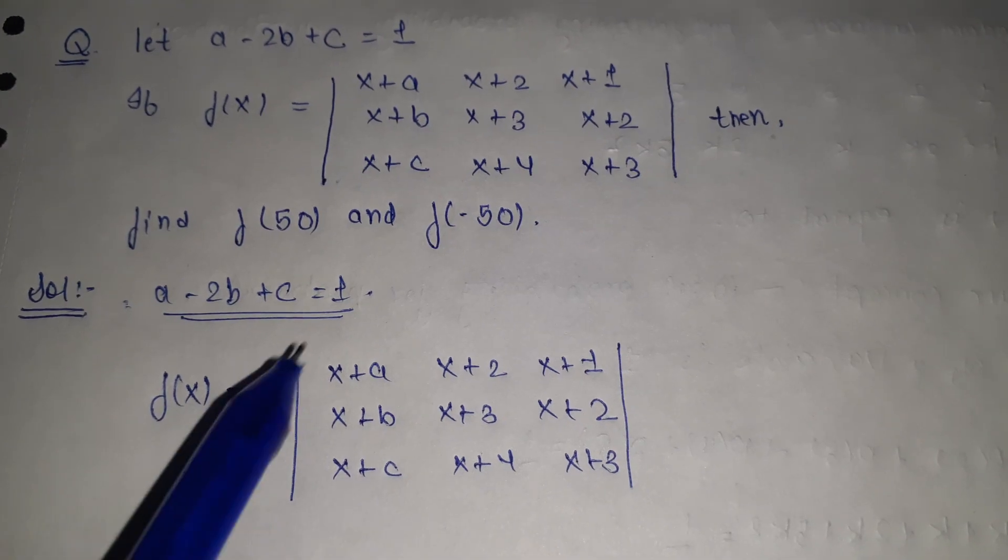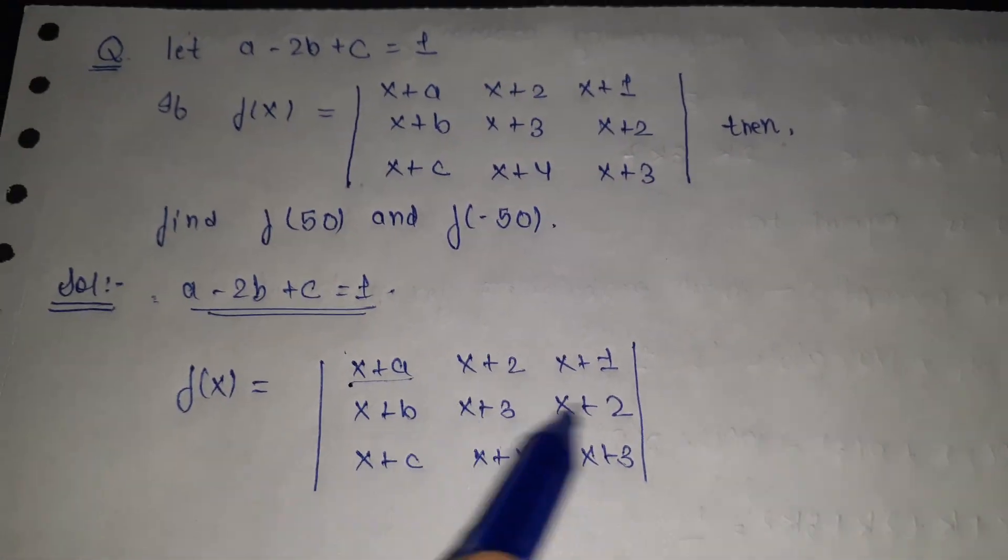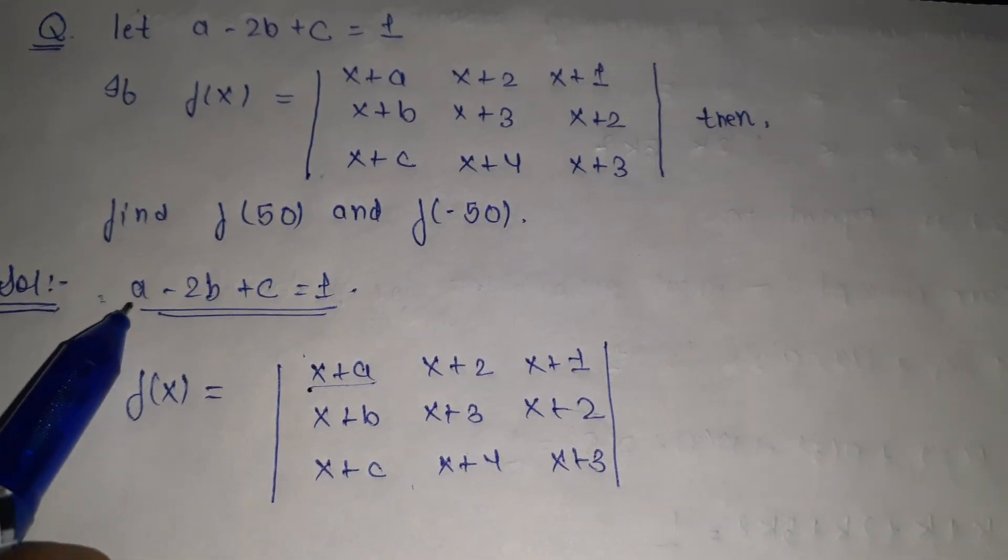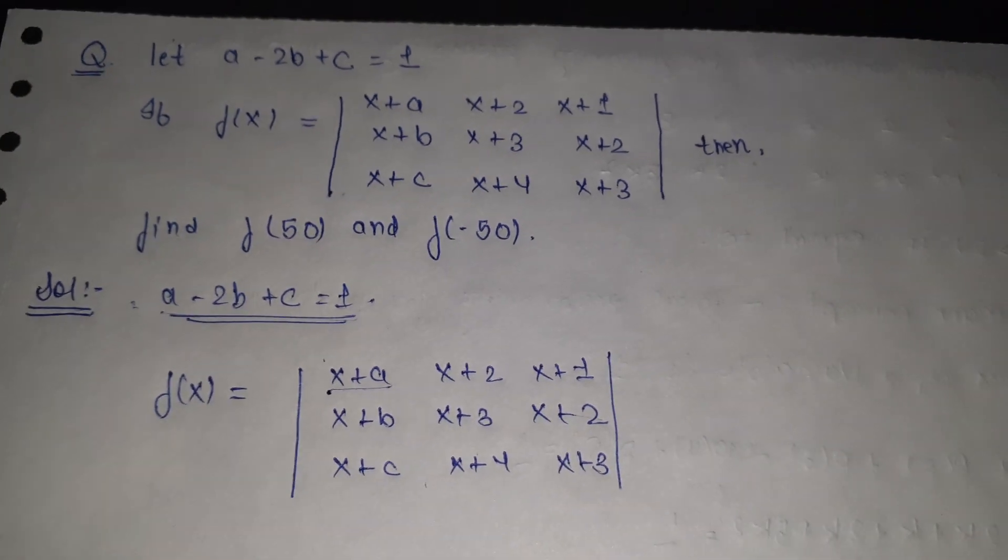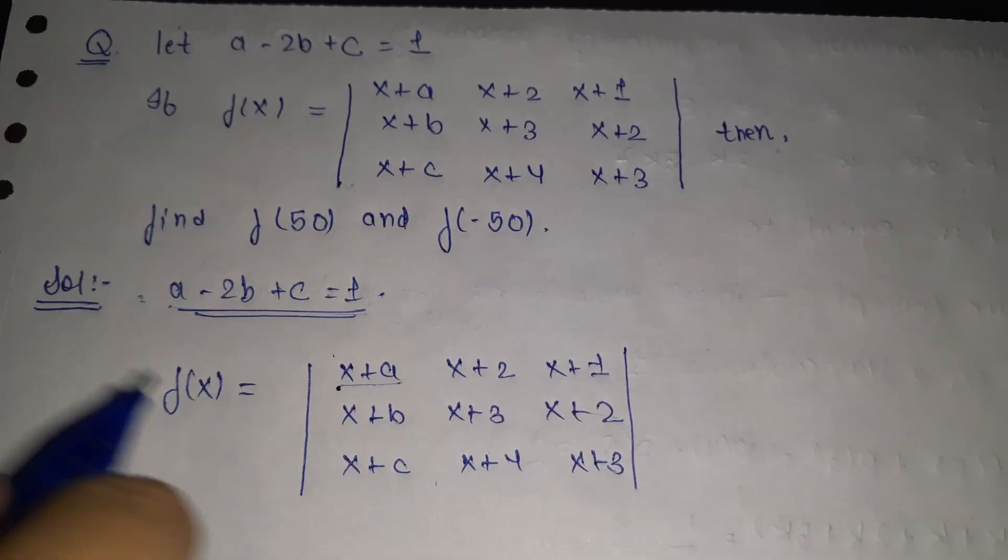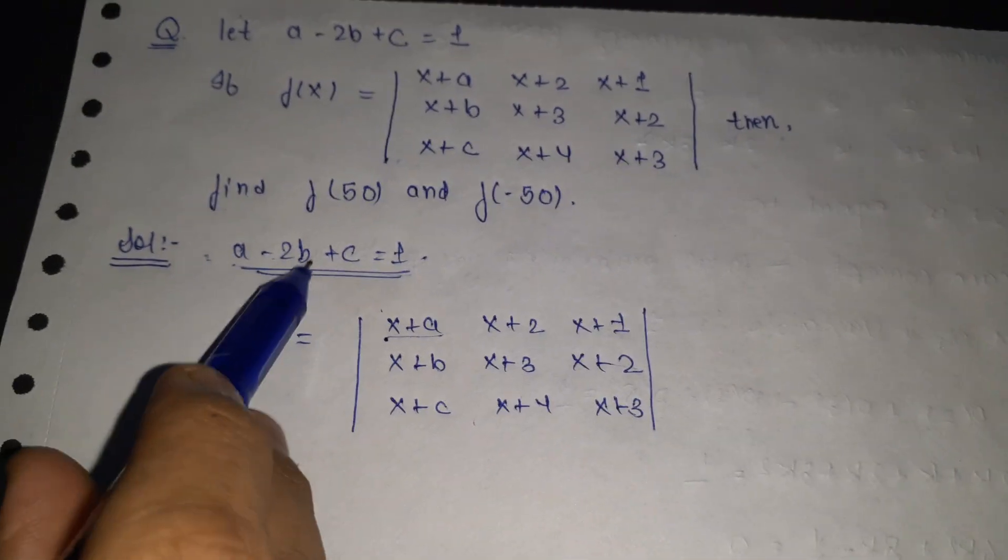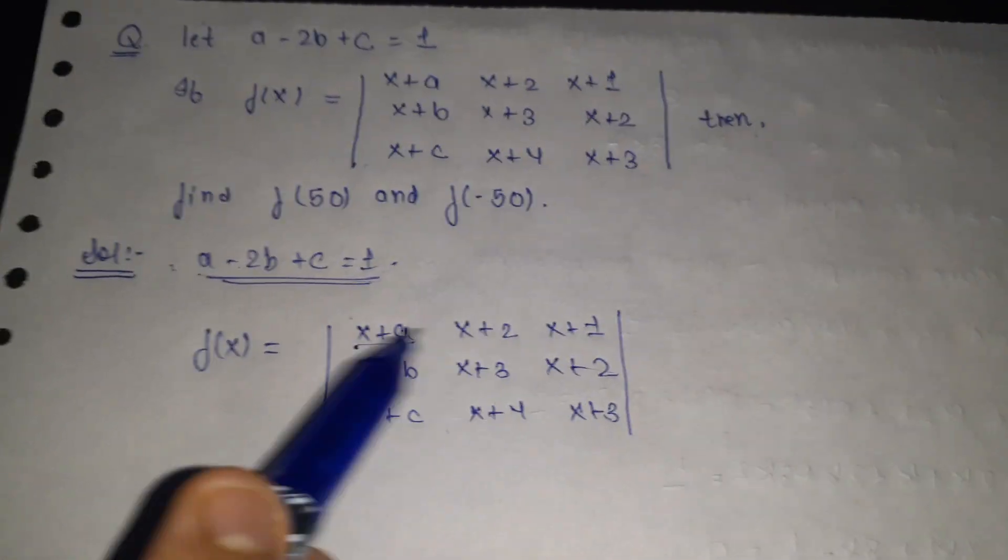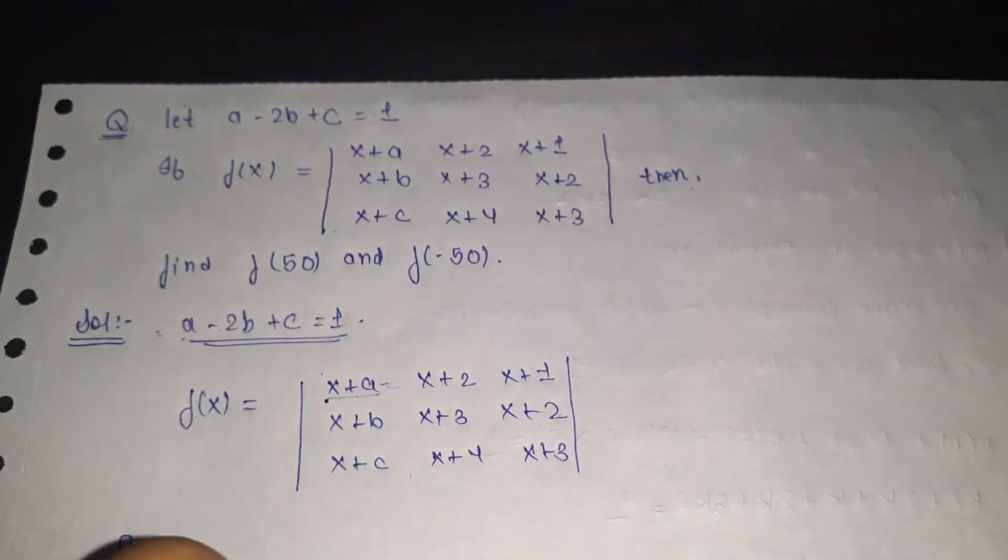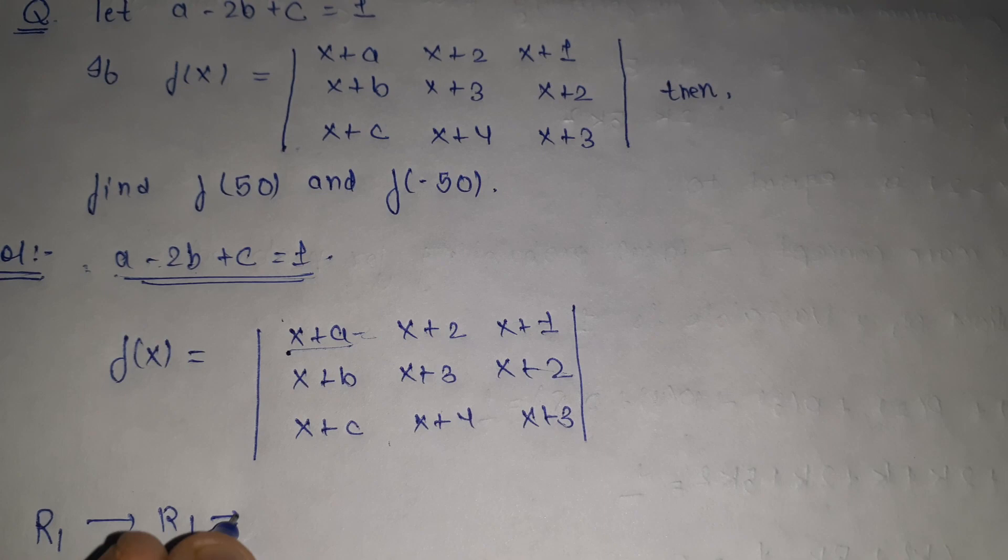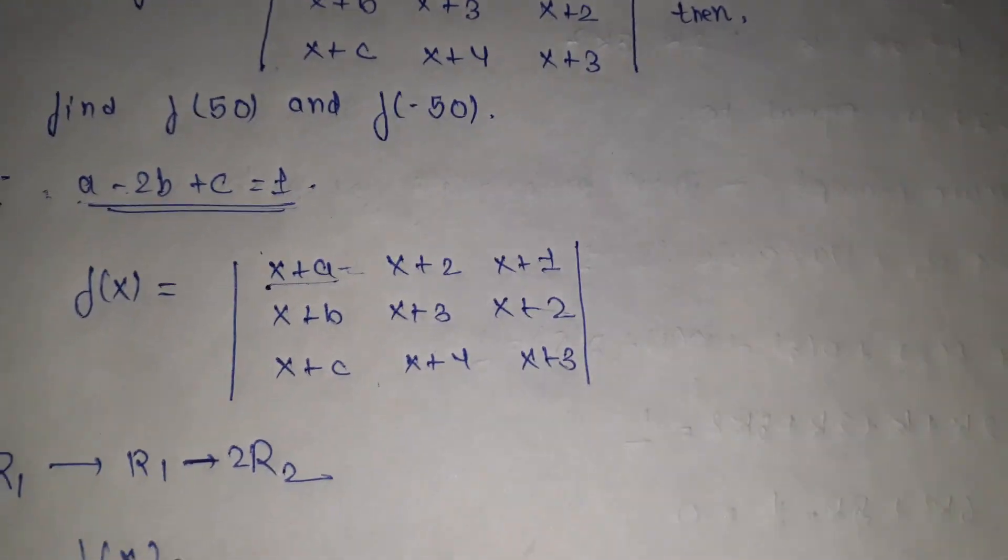Here it is given a minus 2b plus c, so we will try to form a minus 2b plus c here. In order to do that, we will first do R1 goes to R1 minus 2R2. So we get f(x) equal to x plus a minus 2x minus 2b.